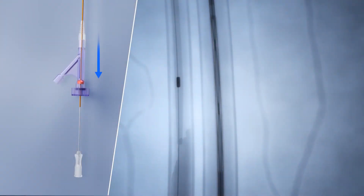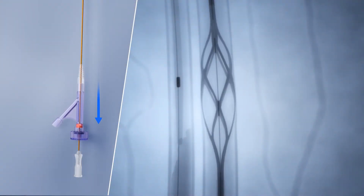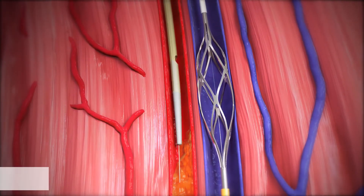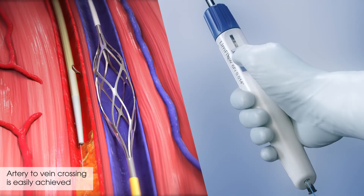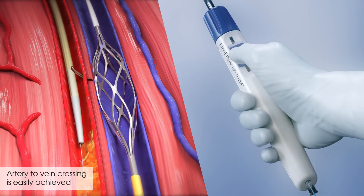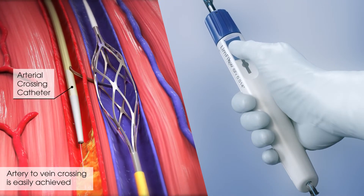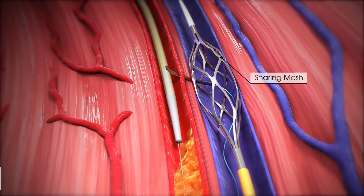Then, the snaring mesh on the venous catheter is deployed and the venous and arterial catheters are aligned. Artery-to-vein crossing is easily achieved by advancing the needle from the arterial crossing catheter into the snaring mesh of the venous catheter.